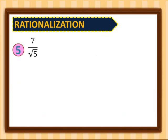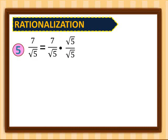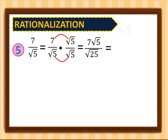Number 5: 7 over square root of 5. Since the numerator is a whole number and the denominator is a radical, we rationalize by multiplying by square root of 5 over square root of 5. So 7 times square root of 5 gives 7 square root of 5. In the denominator, square root of 5 times square root of 5 gives square root of 25, which equals 5. So for number 5, we have 7 square root of 5 over 5.